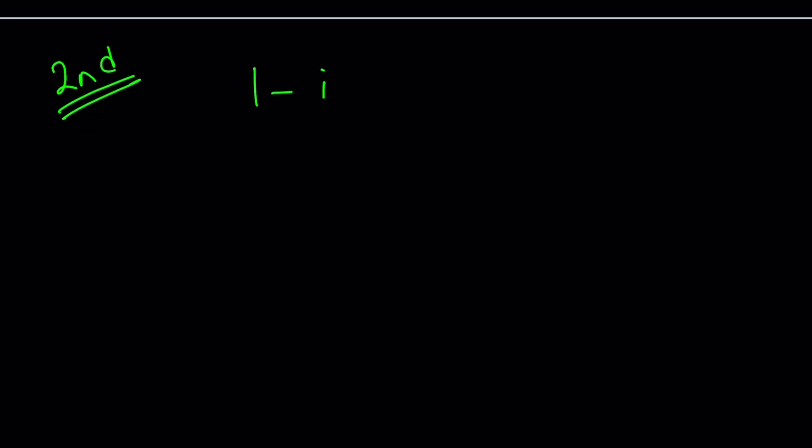Let's go ahead and take a look at the second method. So the second method — and the problem was 1 minus i to the power 99 — that's what we're trying to find.